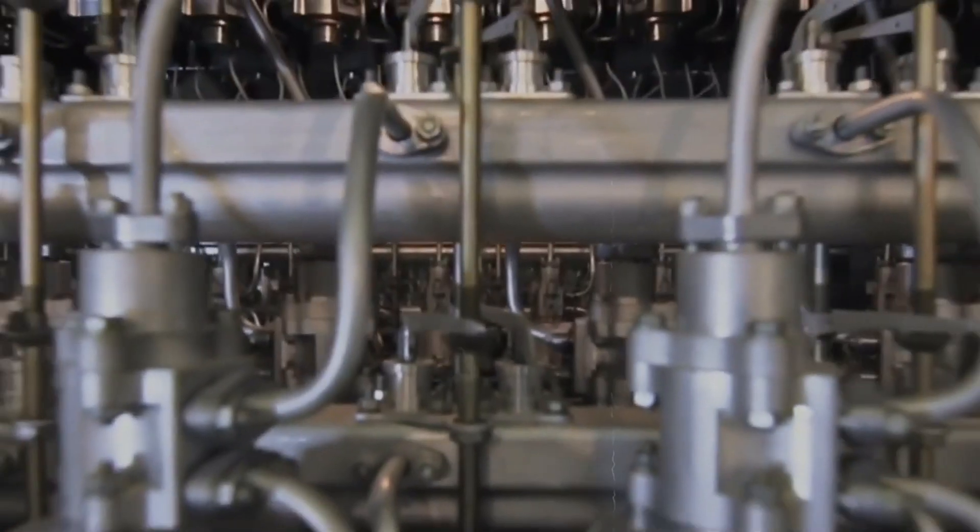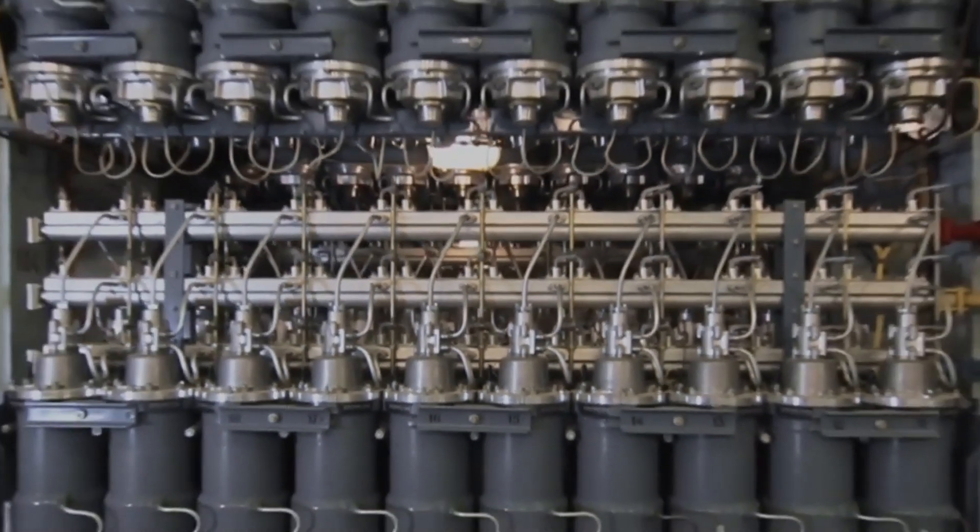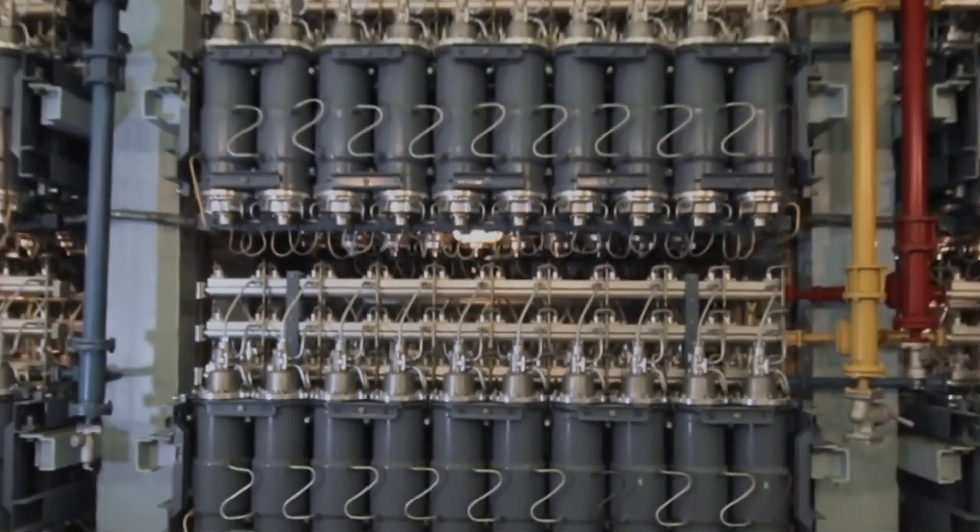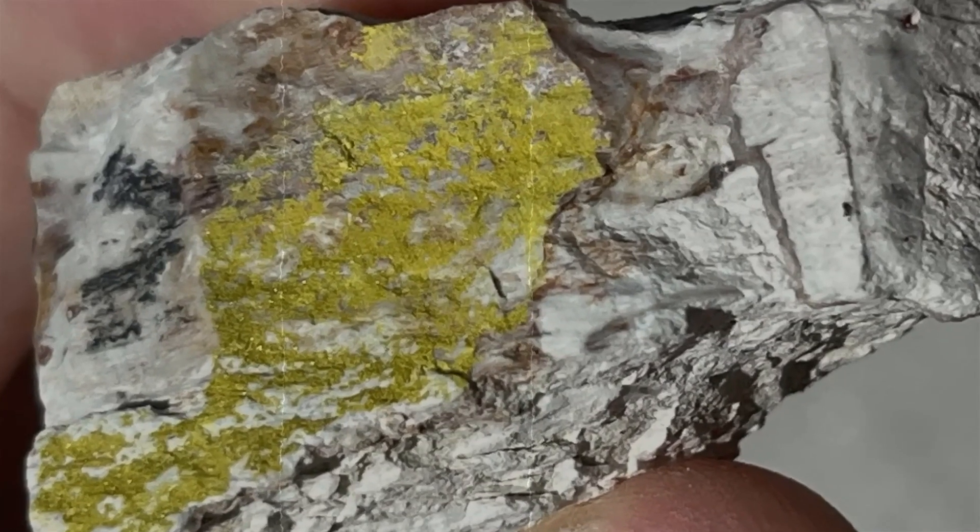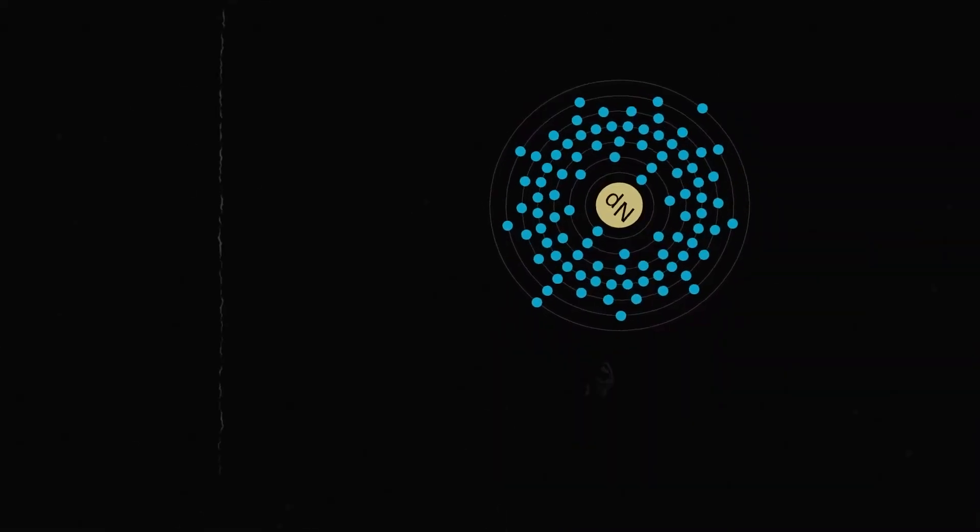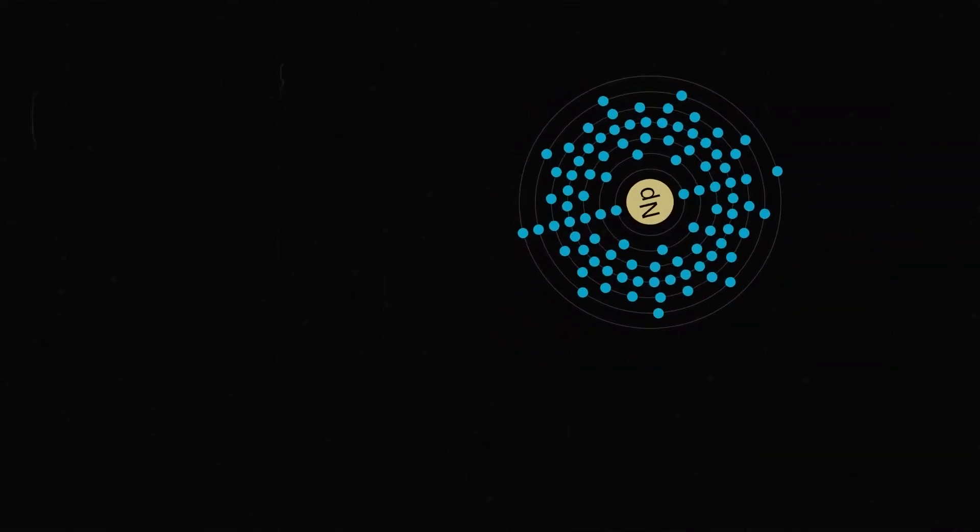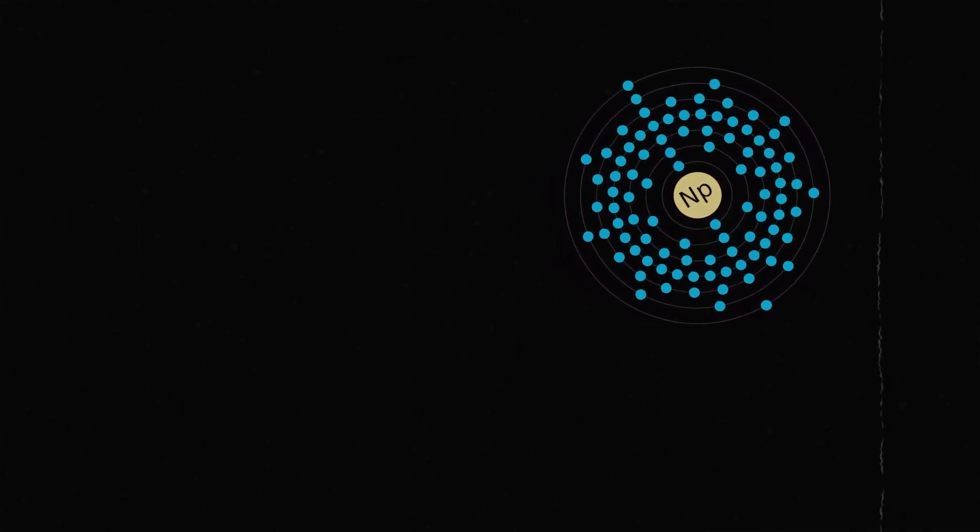Radioactive properties: Neptunium isotopes exhibit radioactive decay, emitting alpha particles, beta particles, and gamma radiation. Neptunium-239, for example, undergoes alpha decay with a half-life of about 2.36 days, transforming into plutonium-239, a crucial element in nuclear reactors and weapons.